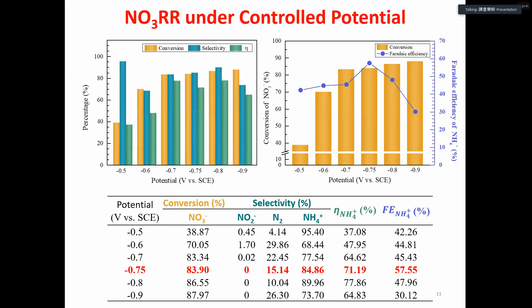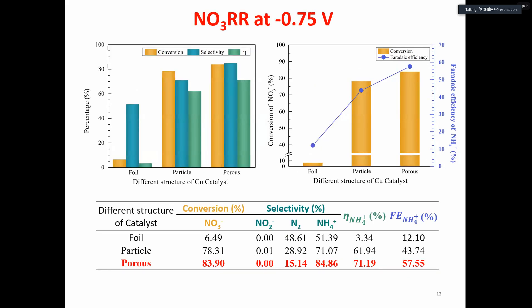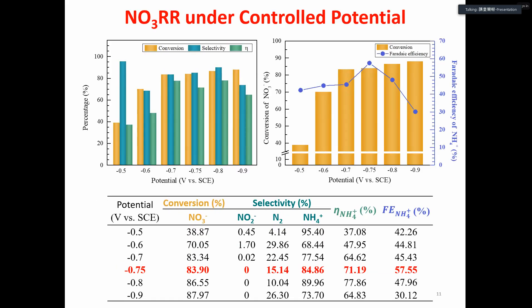Therefore, we changed the constant current reaction to constant potential reaction. Here we selected the reduction potential from minus 0.5 volt to minus 0.9 volt. From the figure shown on the right-hand side, we can find an optimal potential, which is minus 0.75 volt.